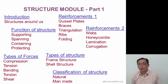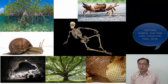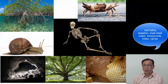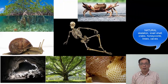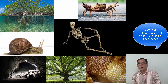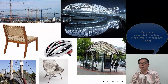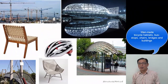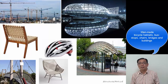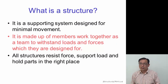Structures are around everywhere around us. You can see there are some natural structures like skeletons, crab shells, snail shells, trees, honeycombs of bees. There are also man-made structures like bicycle helmets, bus stops, chairs, bridges, and buildings.